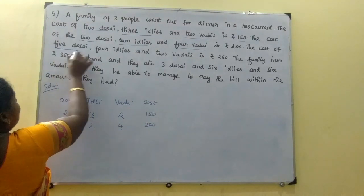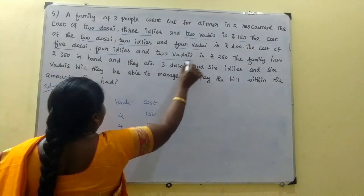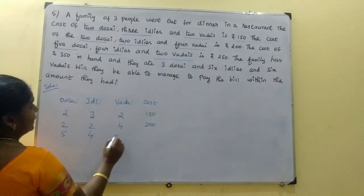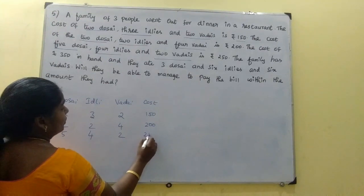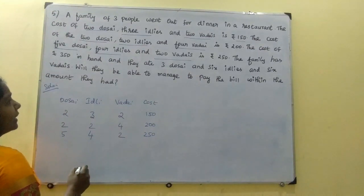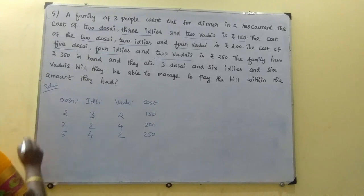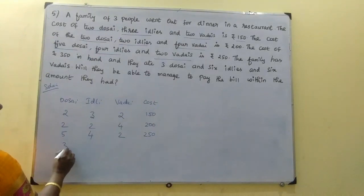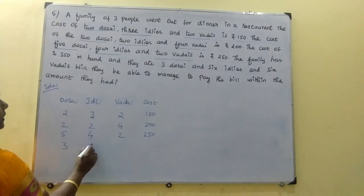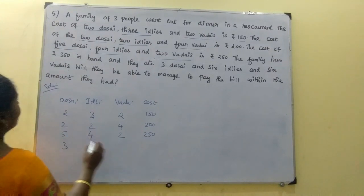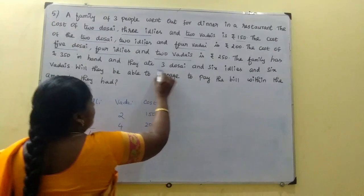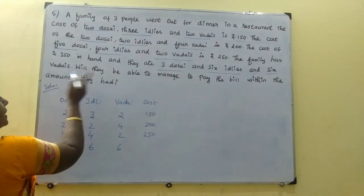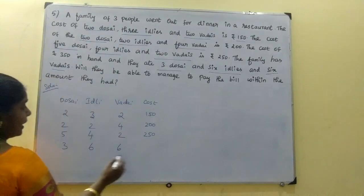At the time of the third order: 5 dosas, 4 idlis and 2 vadas — Rs. 250. So the family has Rs. 350 in hand and they have ordered 3 dosas, 6 idlis and 6 vadas. This is the problem.